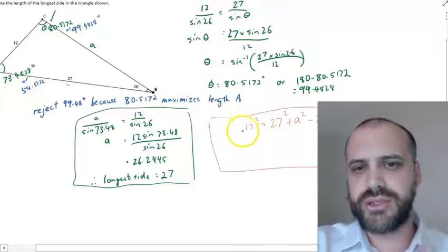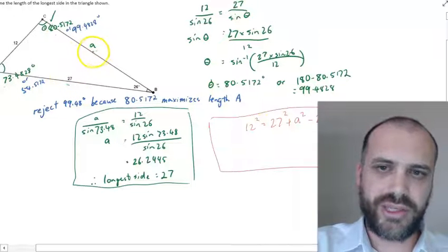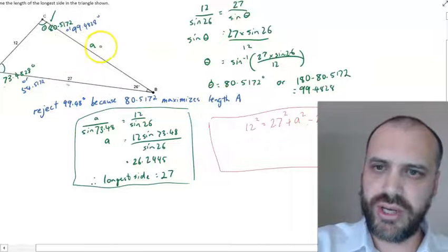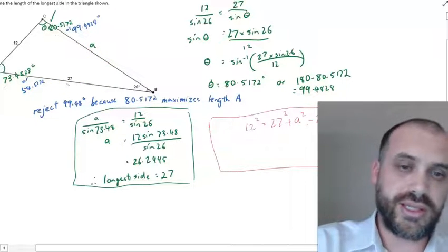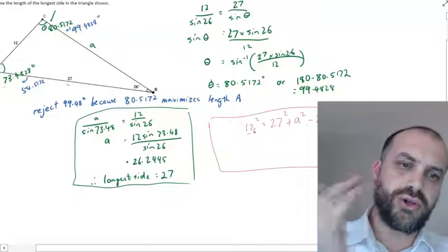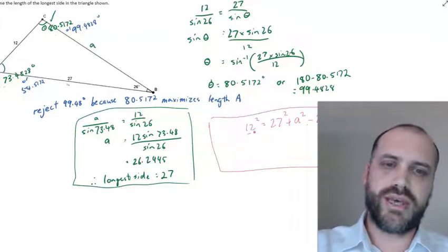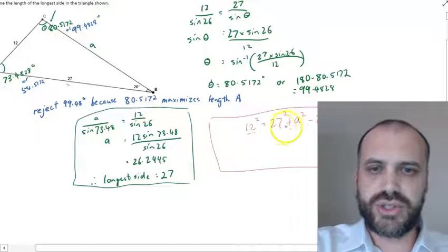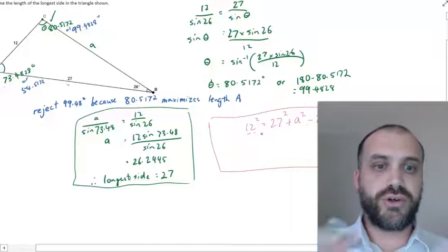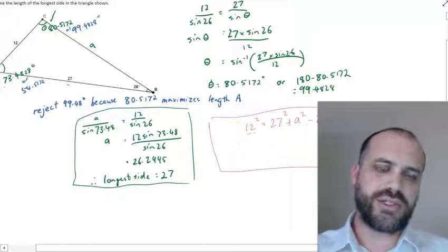The cosine rule that they used here looked like this. We've got 12 equals 27 squared plus the unknown length, A squared, minus 2 times 27 times A, and then cosine 26. And that 26 is the angle opposite this 12 squared here. I say this is a little bit non-standard because back in my day at school, you would never attempt something like this because solving this gets really ugly on a scientific calculator. Of course, we've got graphics calculators now, and so making this play is not terrible.